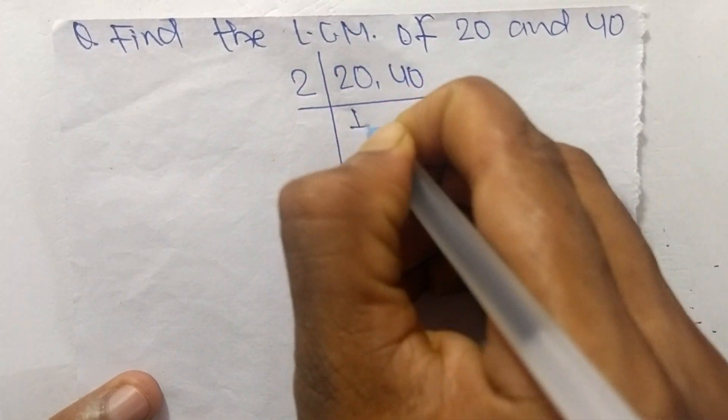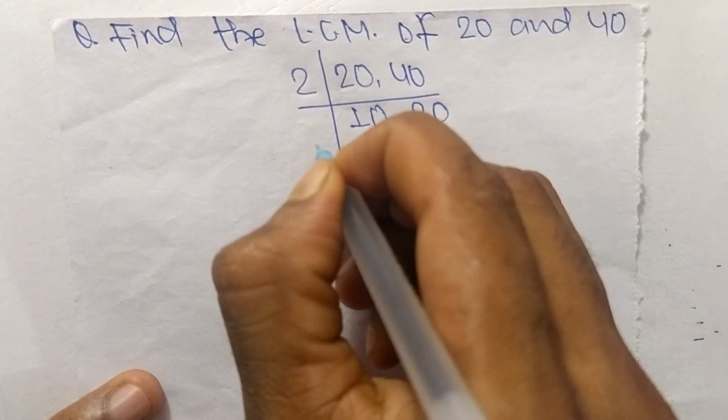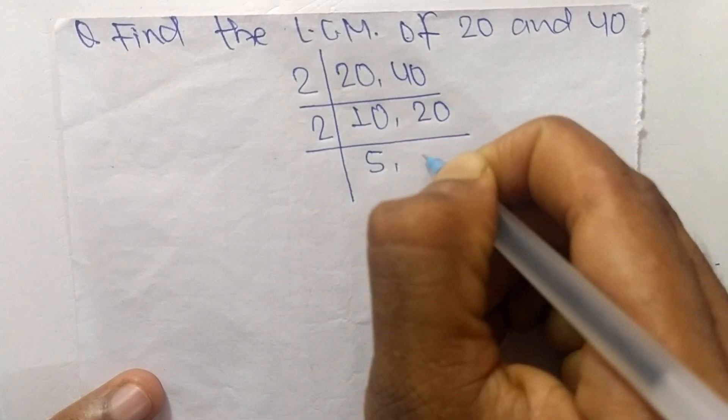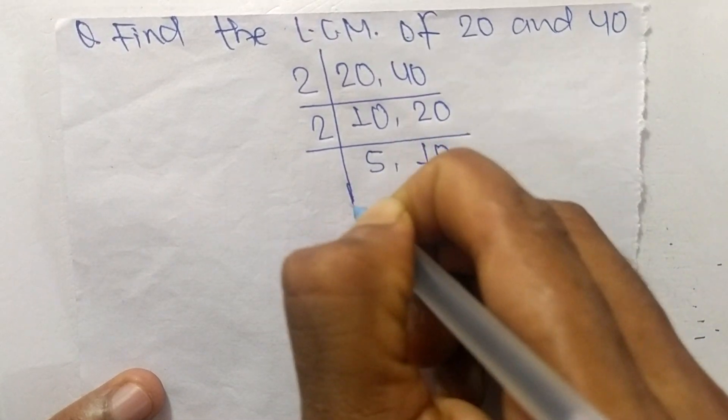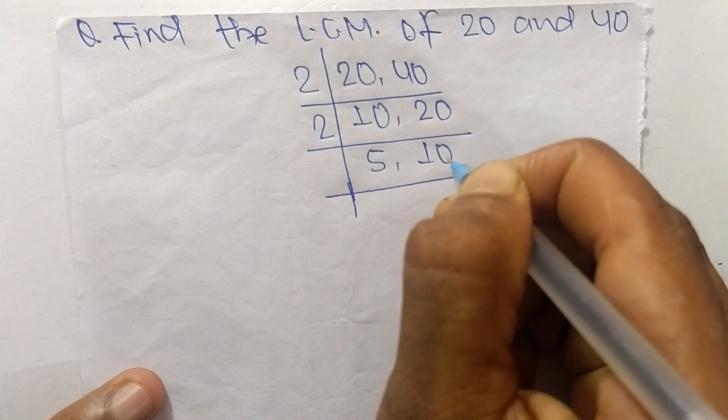So 2 times 10 means 20, 2 times 20 means it is 40. Again, 2 times 5 means 10 and 2 times 10 means it is 20. Now when we take 2, it can divide 10 but can't exactly divide 5.